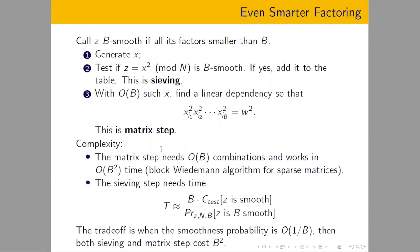Since the matrix step is about B², we'd like both steps to be balanced. If we make the test complexity close to one, the trade-off is where the smoothness probability is about 1/B. This depends on how big Z is — the smaller Z is, the larger B we can take, and the larger numbers we can factor. For example, if you can spend 2^60 time, then your B is 2^30.